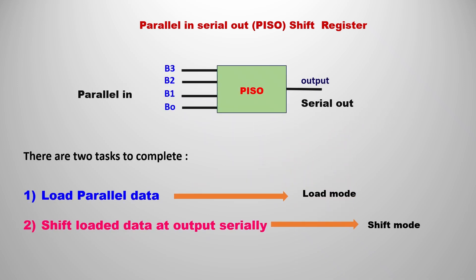This is the block diagram of the PISO shift register. We have four-bit parallel inputs and one serial output. In a PISO shift register there are two main tasks: the first task is to load parallel data, and the second task is to shift the loaded data out serially. The first can be obtained with load mode and the second with shift mode in the circuit diagram.